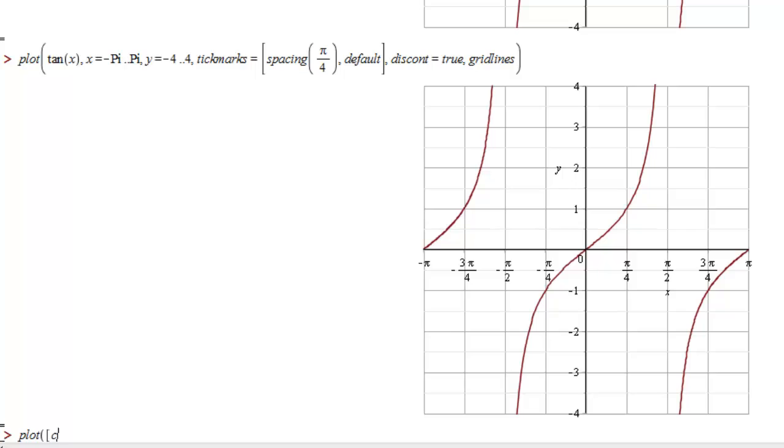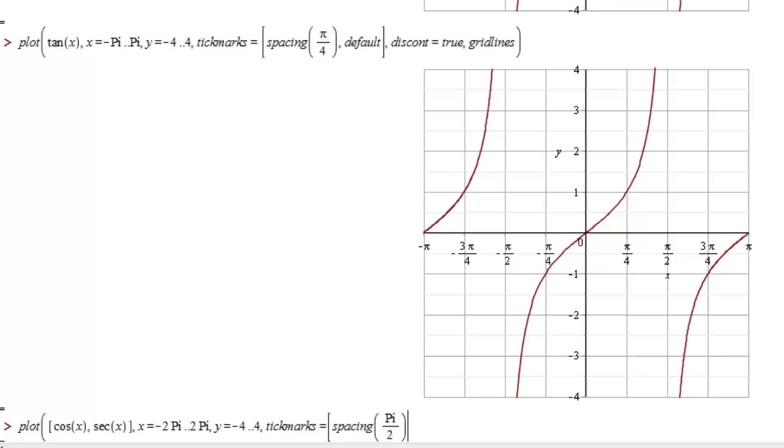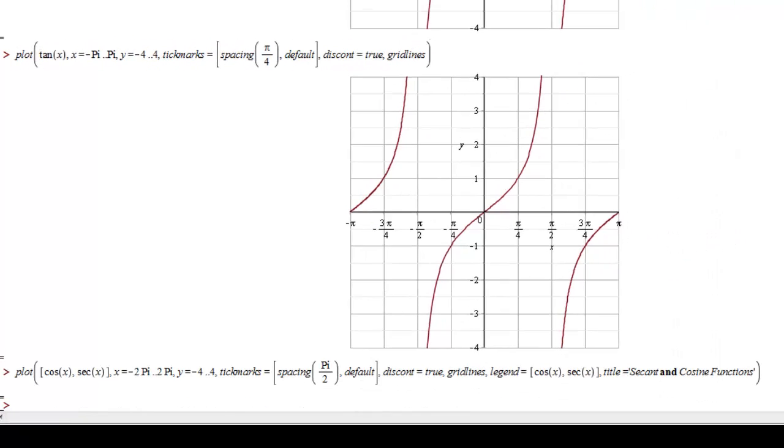So we're going to plot cosine and secant on the same grid from negative 2π to 2π, y going from negative 4 to 4 with tick marks spaced π over 2 apart, standard style tick marks. Secant happens to be discontinuous, so we're going to go ahead and tell it that discont equals true so we don't get ugly vertical lines in the secant graph with grid lines and a legend showing both our functions cosine and secant. And maybe we'll give it a title.